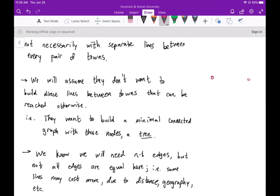For example, if we have something like this, we wouldn't bother creating this edge because we could just go this way, right? So that's something that we would avoid.